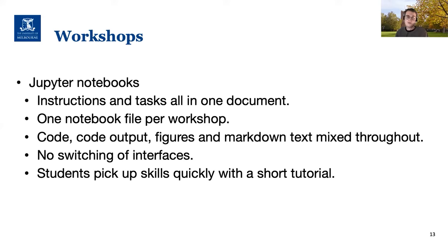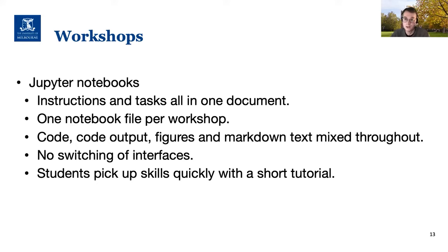The first aspect we used Cloud Store Swan for was our workshops, and for those we used Jupyter Notebooks. I won't explain in too much detail what Jupyter Notebooks are — I'll show some examples — but basically they're really great because we can put the instructions and the tasks all in one document. There's only one file per workshop, which keeps it nicely organized. If we're using code, there'll be code in there; you can have the output of the code, figures, diagrams, and text — all mixed in the same document, in whatever order you want. You don't have to switch interfaces.